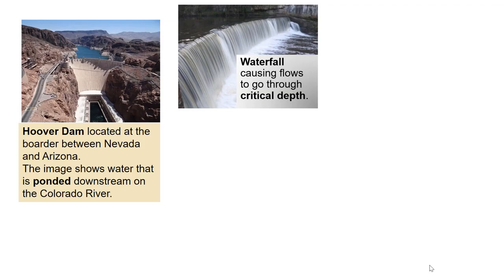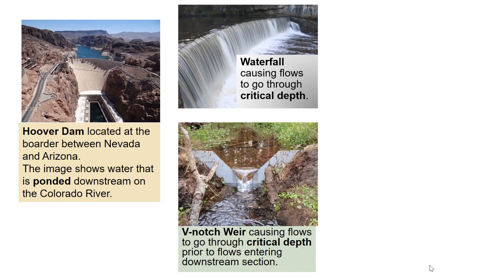A waterfall effect causes the flows to go through critical. Flows upstream of the waterfall are under subcritical flow, causing the water to go under drawdown conditions. A weir, such as this V-notch weir, causes flows to go through critical depth prior to the flows entering the downstream section. Upstream of the weir, the flows are subcritical, causing a drawdown effect.